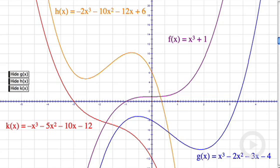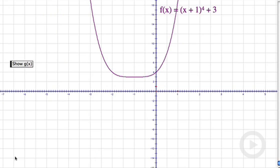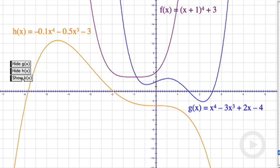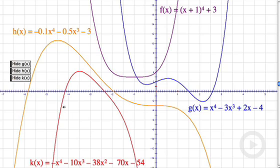Let's take a look at fourth degree polynomial functions, which are called quartic functions. Here we have f of x equals x plus 1, the quantity to the fourth plus 3. Here's another, another, and another. So we have four quartic, four fourth degree polynomial functions.